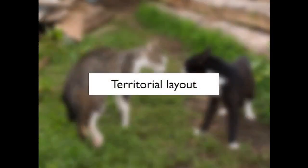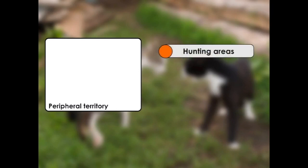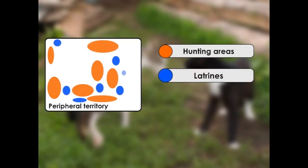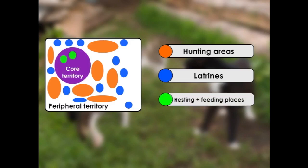The first thing to consider is the territorial layout that cats use. There are two main areas of the territory. The first is the peripheral territory, which is the boundary that contains all of the major resources the cat uses, including a large number of hunting areas and latrine sites. Towards the centre of this territory there's a second area called the core territory, where the cat's resting and feeding places are located.